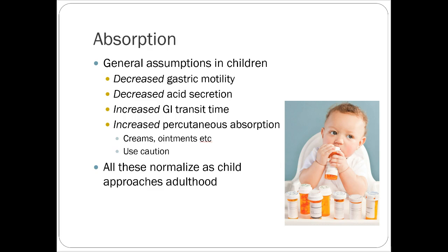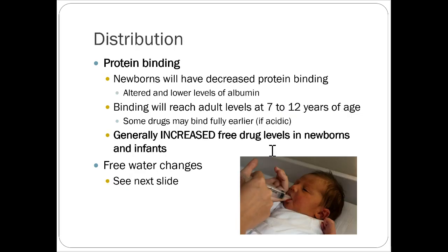Going through absorption, distribution, metabolism, and excretion — for absorption, there are a few assumptions in children: usually decreased gastric motility, decreased acid secretion, increased GI transit time, and increased percutaneous absorption. Kids are a lot more sensitive to certain things, especially topical applications. As a child gets older these tend to normalize approaching adolescence. For protein binding, newborns have significantly decreased protein binding with lower levels of albumin, and albumin levels normalize to adult similarity around 7 to 12 years of age.